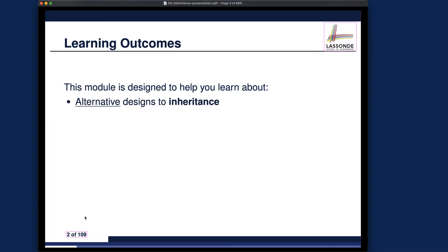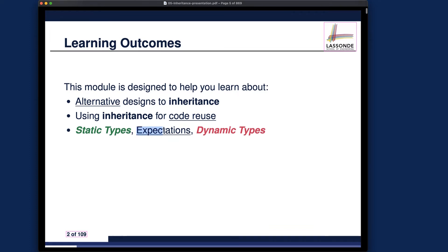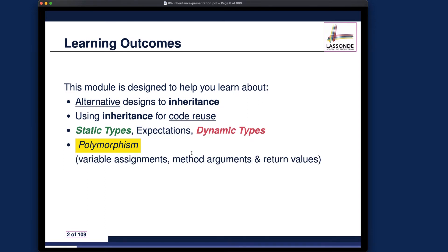We want to talk about some alternative designs — to begin with, what if you don't use inheritance? What kind of design principles can you violate? We'll talk about using inheritance for code reuse. People would typically say you can avoid code duplicates, which is definitely a good thing, but there's more to it. At a deeper level, we want to talk about static types, expectations, and also dynamic types.